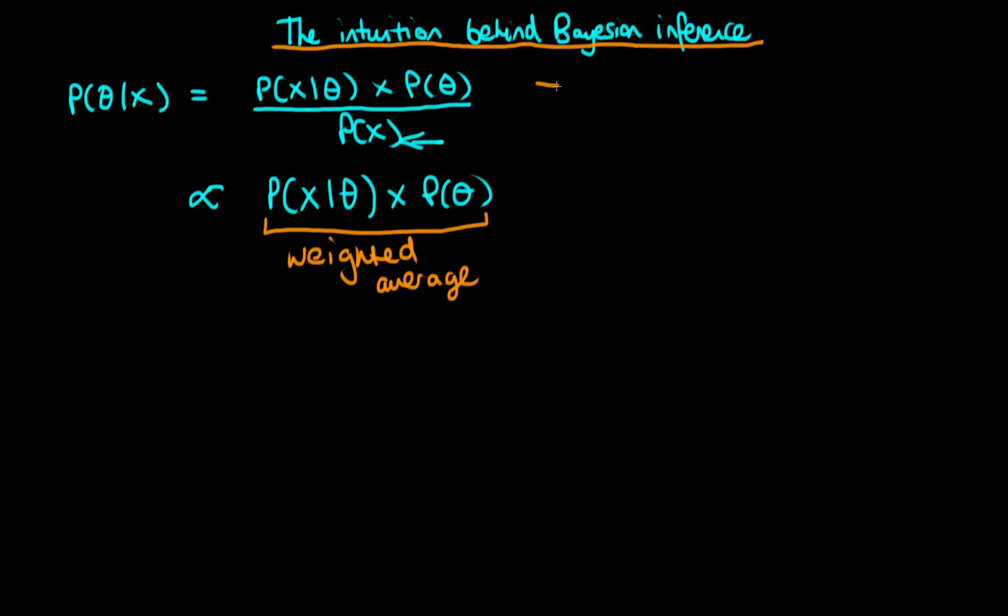So what does that mean? Well it means that in general the posterior peak, the peak value of the posterior and in general the posterior probability mass, is somewhere between the location of the likelihood peak, in other words the kind of maximum likelihood estimator, and the peak of the prior.